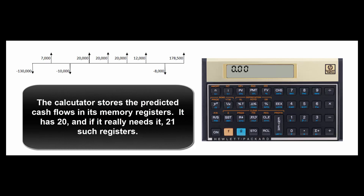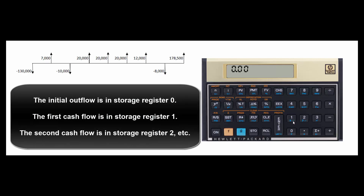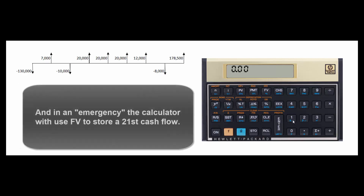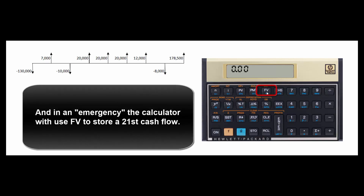It isn't 100% necessary that you know this, but what the calculator does is store the information you give it. CF0 data goes in register zero, the first cash flow in register one, register two, register three, and so on. Past ten, it uses 0.0 for eleven, 0.1 for twelve, etc. If it runs out of storage registers, the calculator uses the FV key as a last stop for memory storage.